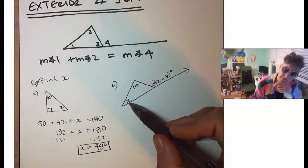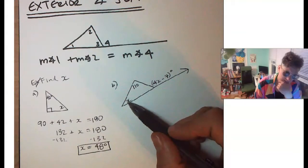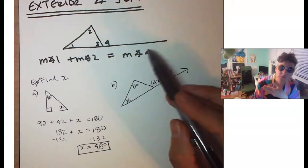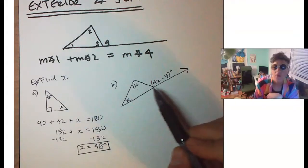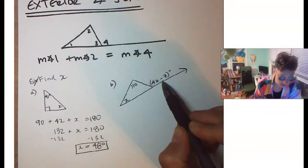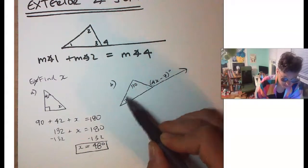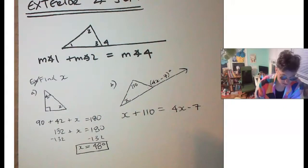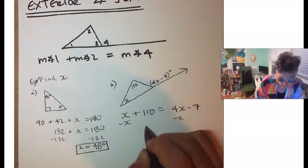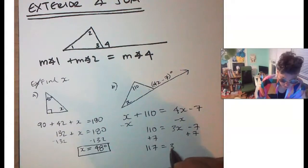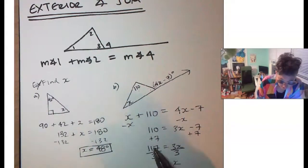Example B: we have a triangle with an interior angle of x degrees, another interior angle of 110 degrees, and an exterior angle of (4x − 7) degrees. Using the Exterior Angle Theorem, x plus 110 equals 4x minus 7. Rearranging gives 110 plus 7 equals 3x, so 117 equals 3x, and dividing by 3 gives x equals 39.